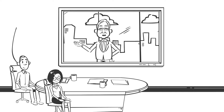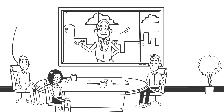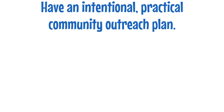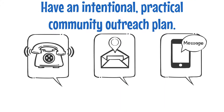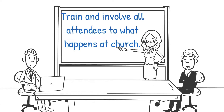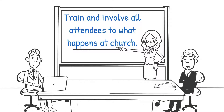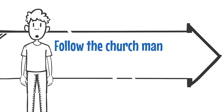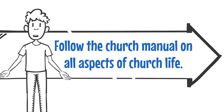Leaders of house churches should prioritize the attendance of leadership meetings, physically or through technological means. Have an intentional, practical community outreach plan. Train and involve all attendees in all church activities, and follow the church manual on all aspects of church life.